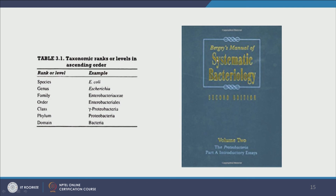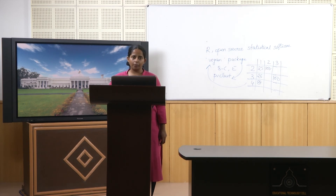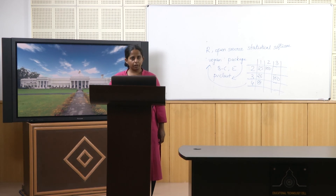Another very important resource is Bergey's Manual of Systematic Bacteriology. There are two volumes: one based on morphology and one based on genetics. The genetics-based volume covers all known phyla, classes, orders, families, genera, and species of bacteria. I encourage you to get a soft or hard copy — it will be very helpful throughout your career. Dear students, this is all for today. In the next class we will dive into environmental problems and how we apply everything studied until now to solve them, along with a brief look at the latest microbiological tools used in applied environmental microbiology.